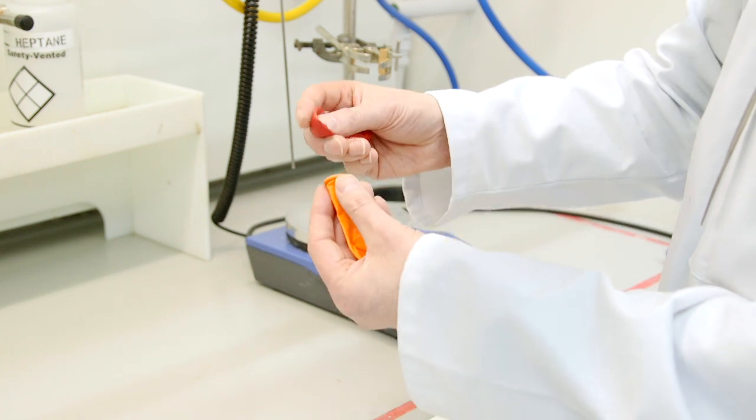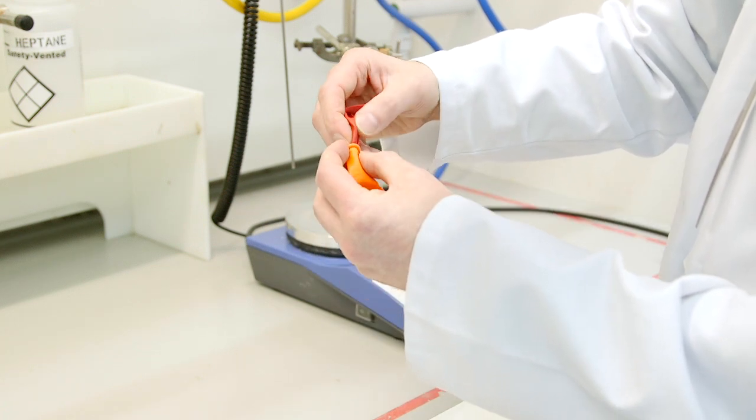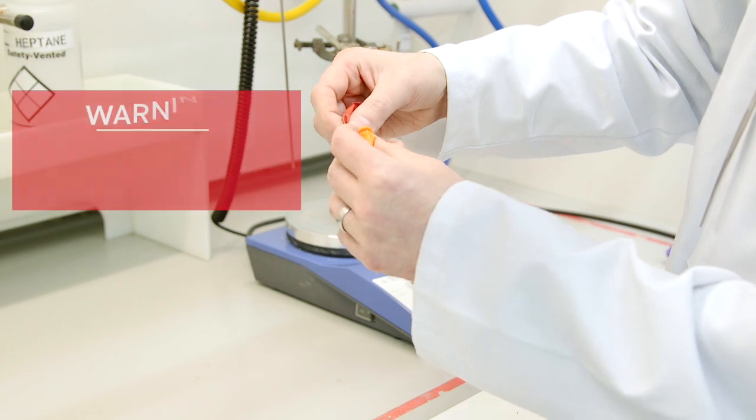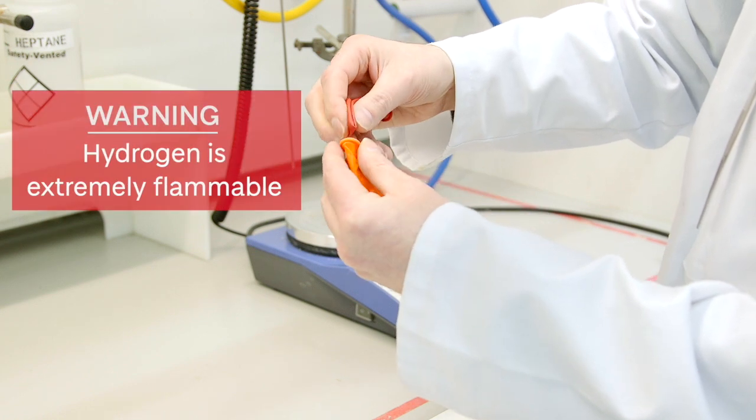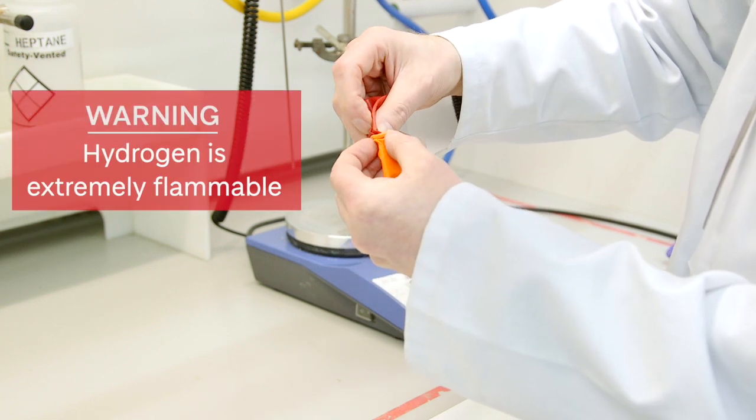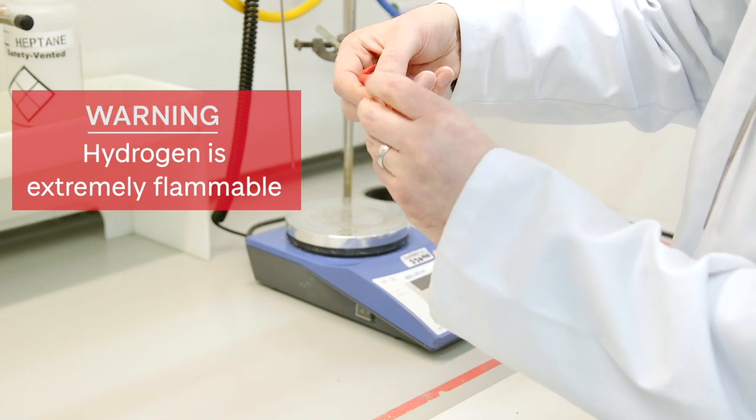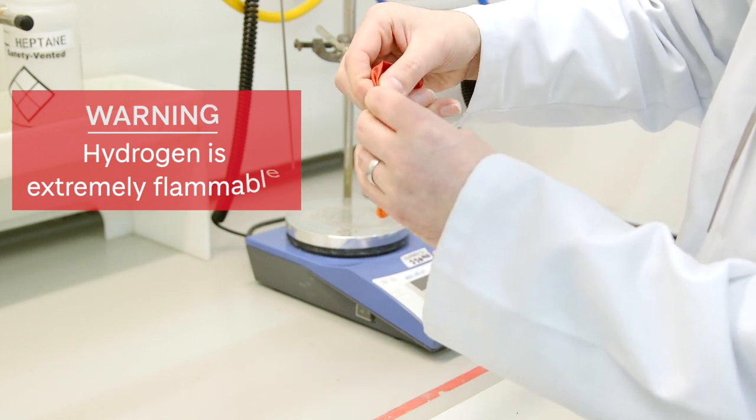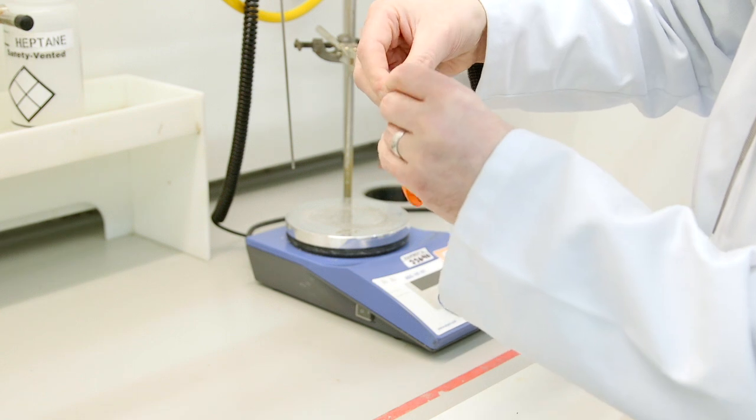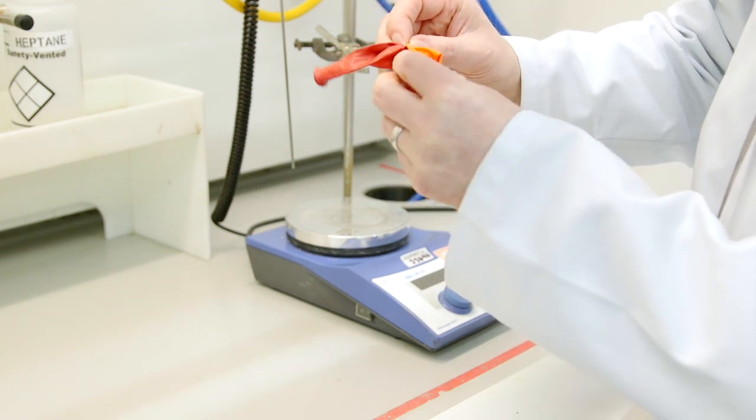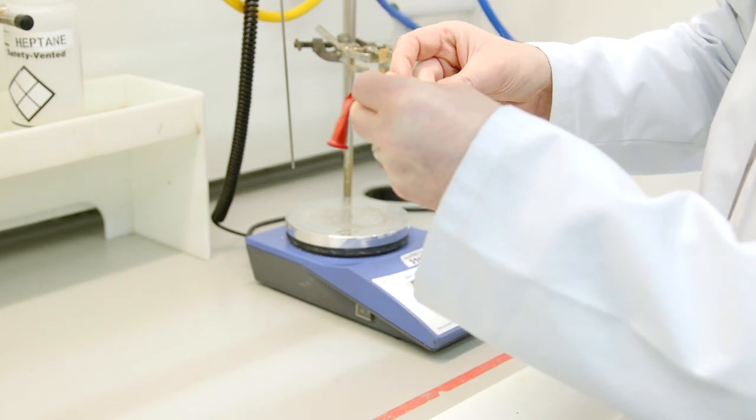To begin we are first going to make our balloon for the hydrogen gas. Hydrogen is a very flammable gas and as such we need to take an extra level of care than we would do for other gases such as nitrogen. If we make a nitrogen balloon we would use a single balloon, but for hydrogen we use two.